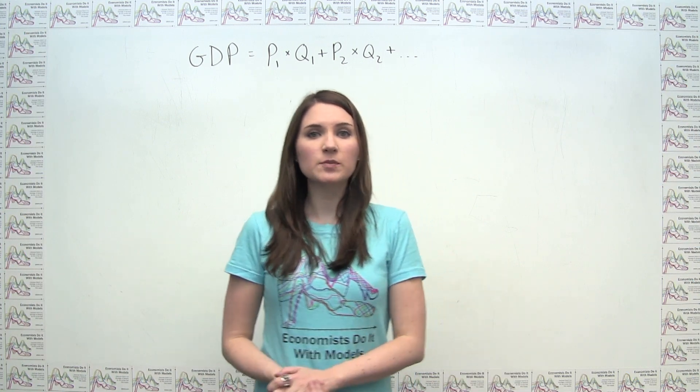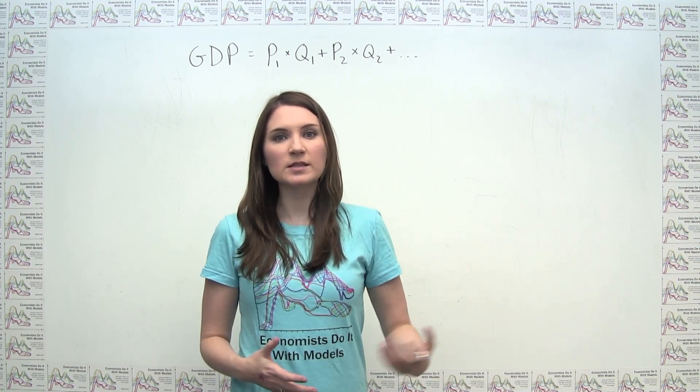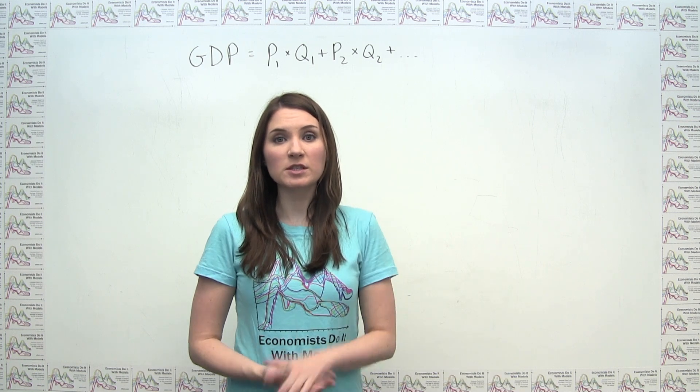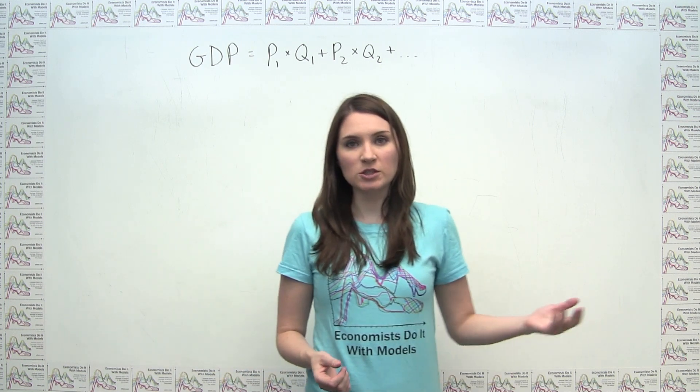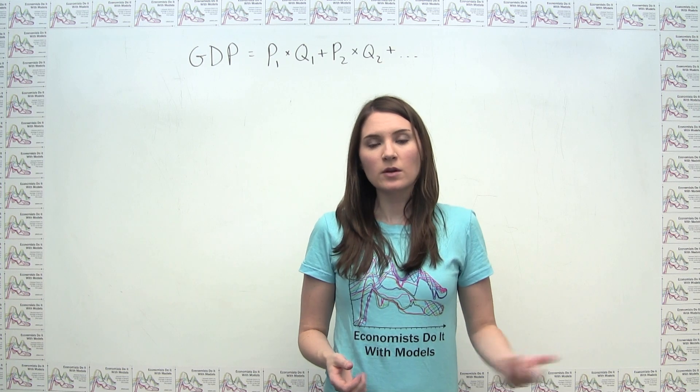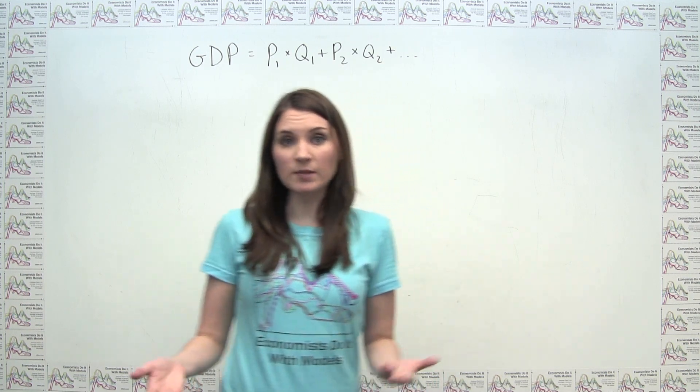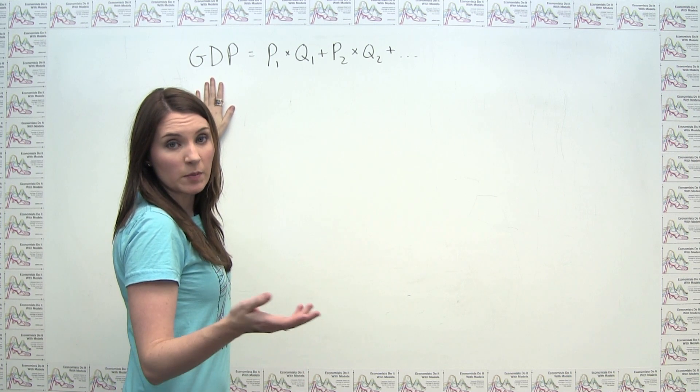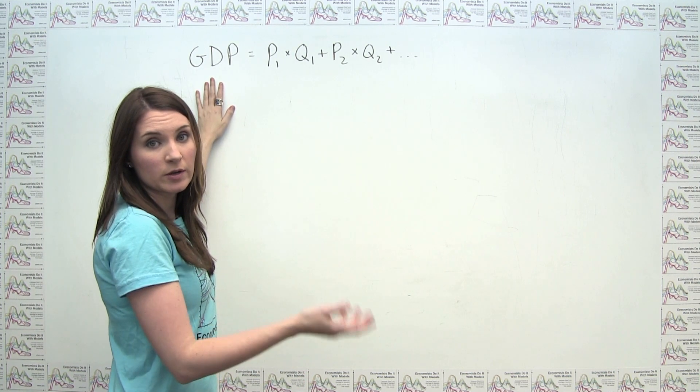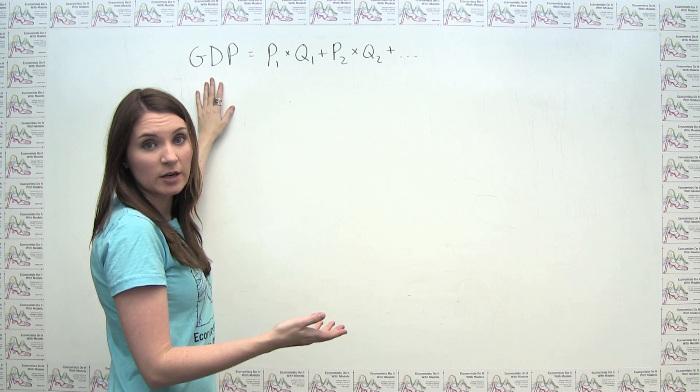Now that we've defined GDP conceptually and explained the different categories of GDP expenditure, we can think about how to calculate GDP mathematically. It turns out that's actually really simple. We can say that GDP, which represents either total output or total income or expenditure in an economy,